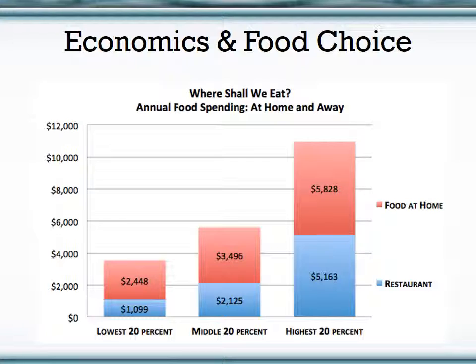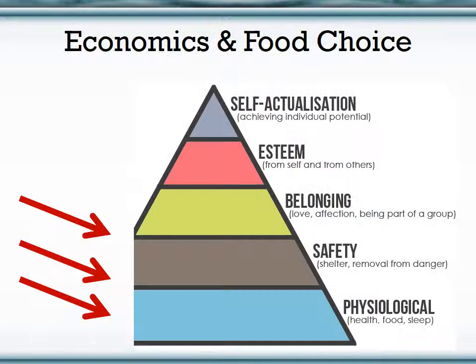People in the highest 20th percent can spend a lot more money on health foods, spend money on foods to eat out, and really put a lot of their resources into food — and it's still going to have less of a stress impact than it would for the people in the lowest 20th percentile. Take one more look at Maslow's hierarchy: people that are of lower economic status, there's a much greater chance that they are going to use foods to fulfill more basic needs.